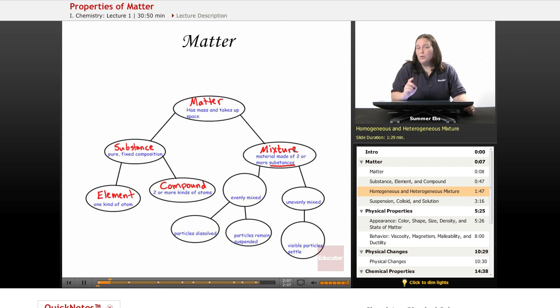And there are two main types of mixtures. There's a mixture that's evenly mixed where it all looks the same. So we're looking at a prefix meaning same. You might have heard of this prefix before. Homo meaning same. And for a mixture, we're looking at a homogeneous mixture. I know it doesn't fit in the circle. But homogeneous mixture, you might hear it as well.